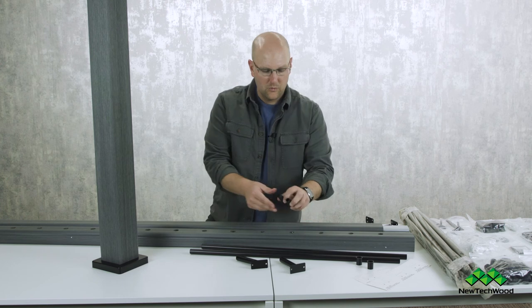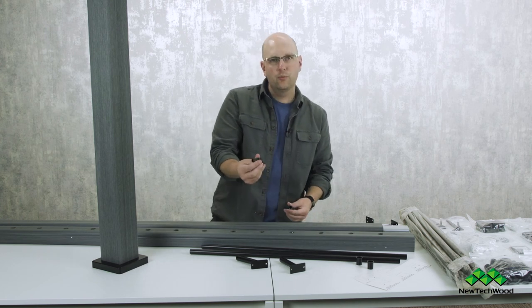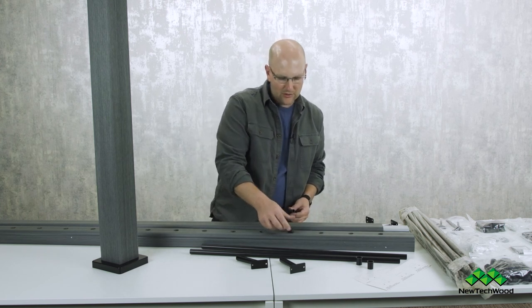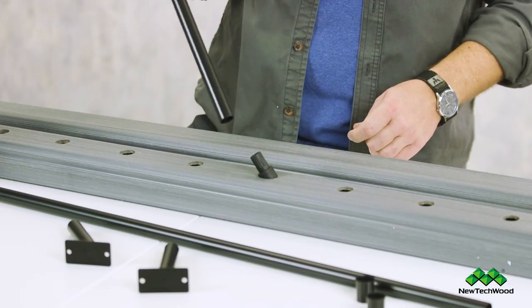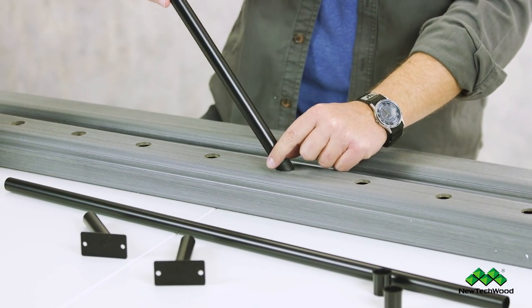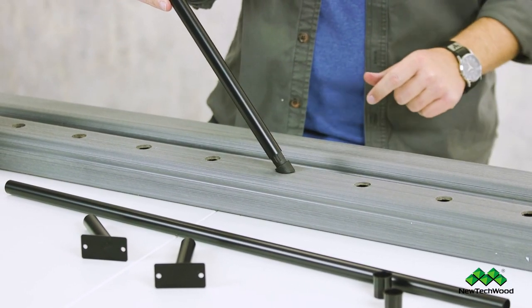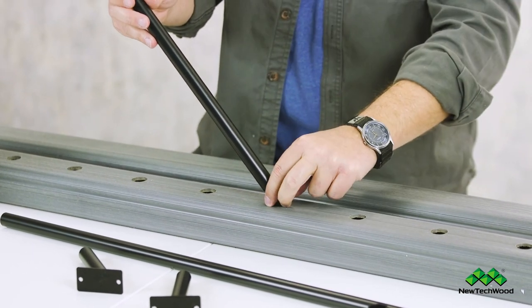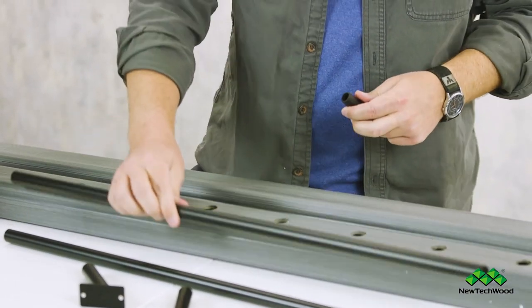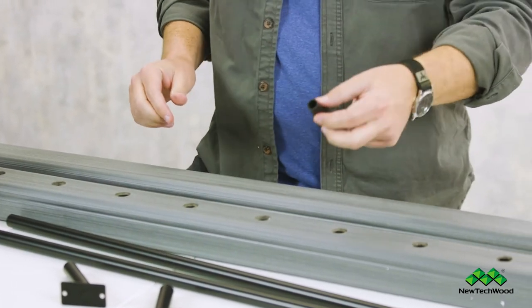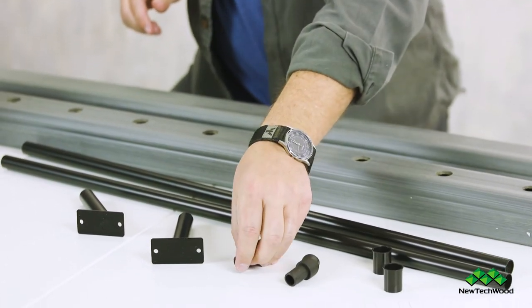Finally for your balusters we have these angled baluster plugs. So this seats in like this and then your baluster just goes right like this and the great thing is that all of these angles match. So it's really easy to convert this from a straight railing system to a stair railing system.